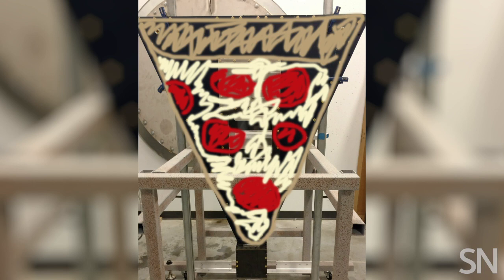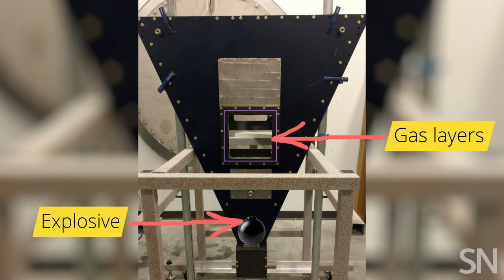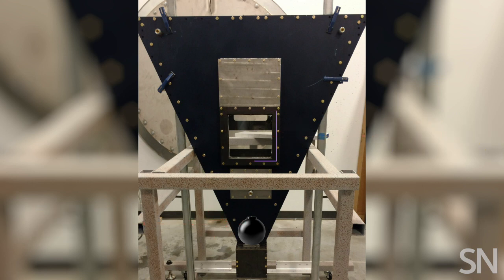Build a pizza-slice-shaped blast chamber to mimic a wedge of a star. Fill it with two layers of gas to mimic the onion structure. And add a powerful explosive. To capture the blast's aftermath, the researchers illuminate the gas with laser light. And they let her rip.